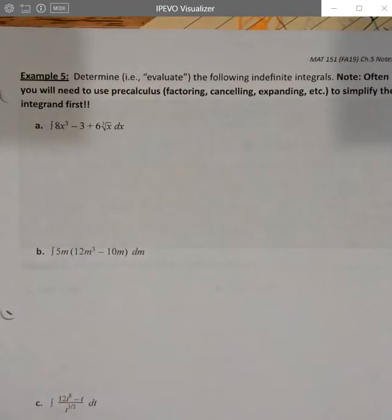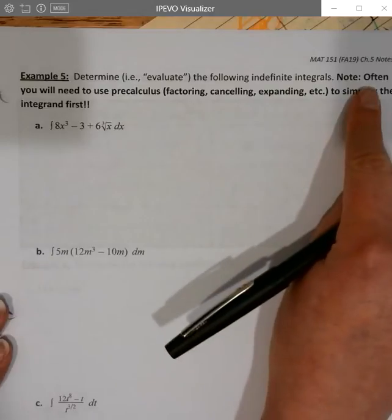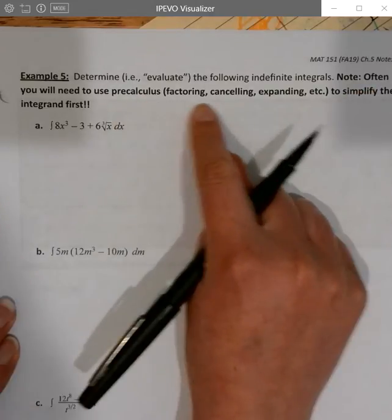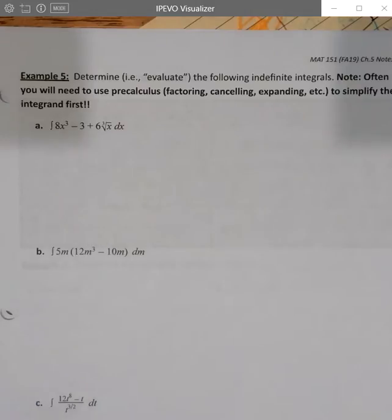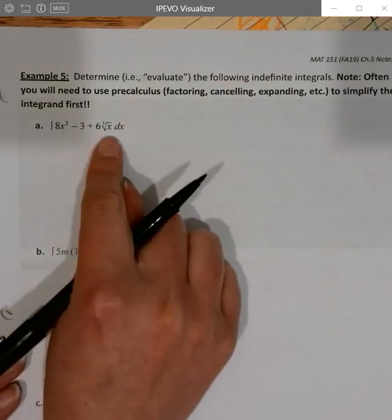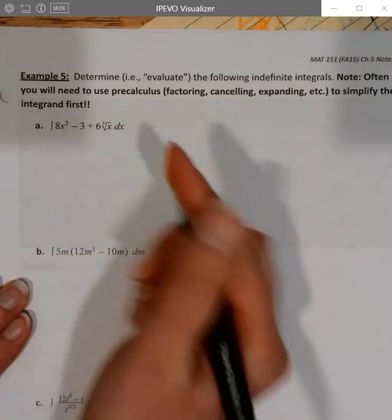Taking a look at the next page, we've got some more examples. Determine, i.e. evaluate the following indefinite integrals. All right, so we may have to rearrange these using some precalculus, using some factoring, canceling, expanding to get them simplified. So in the first one, we're actually very familiar with having to rewrite radicals. We had to do that for derivatives as well, so we're going to do that here.